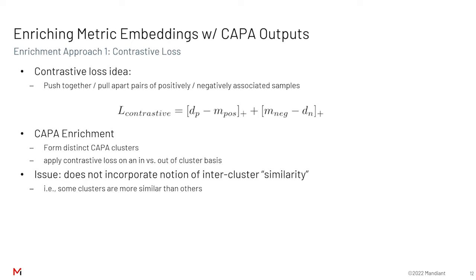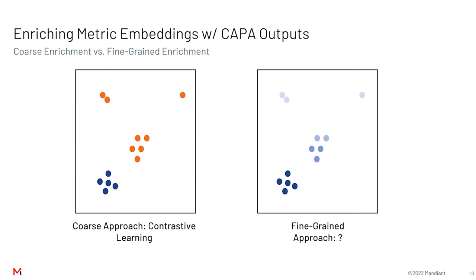There is a limitation with a purely contrastive regime: there's no notion of inter-cluster or inter-sample similarity. As illustrated on the left-hand schematic, we see a few distinct clusters where similar samples in the same cluster are shown in blue and dissimilar samples are shown in orange. However, regardless of how far apart the orange samples are, they're penalized the same. Is there a more fine-grained approach that incorporates this notion of inter-sample or inter-cluster similarity without penalizing everything equally?